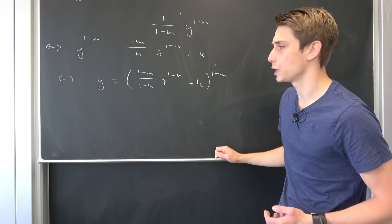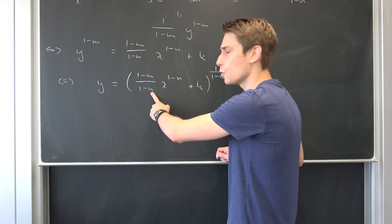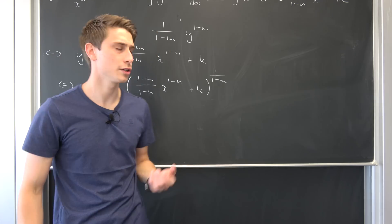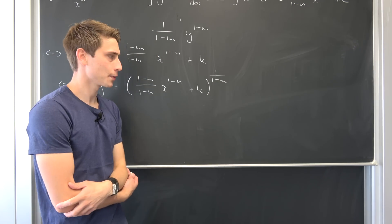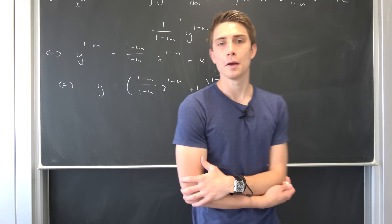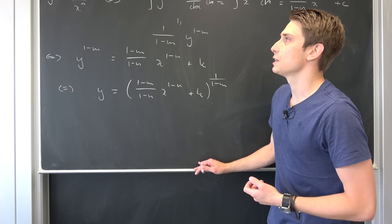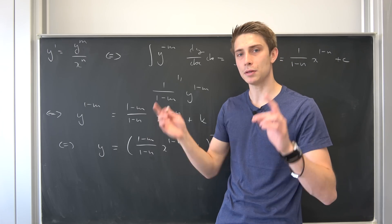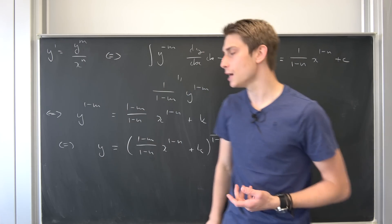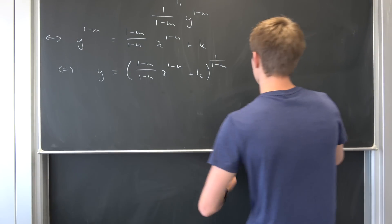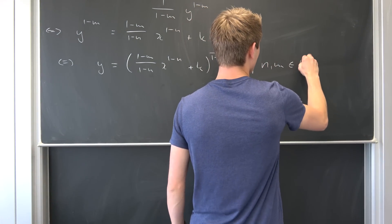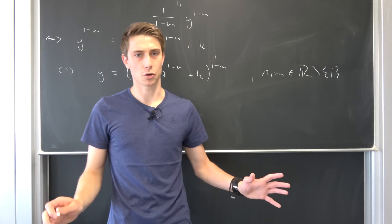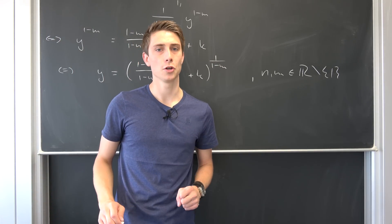You might have guessed it — we run into a contradiction if either n equals 1 (because we'd divide by zero) or m equals 1 (because we'd divide by zero up here). We have also considered the case before when n and m are both equal to 1, and when m equals n. So this general solution only holds for n and m being elements of the real numbers, but without 1.